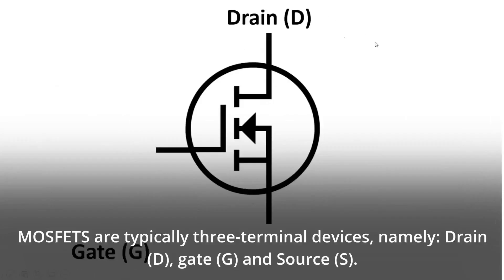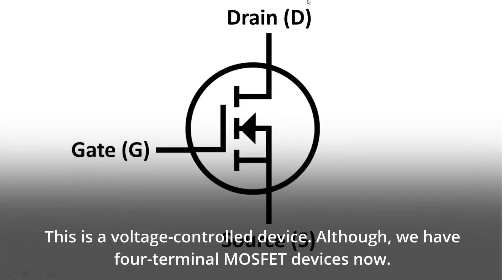We have typically three terminal devices, namely, drain D, gate G, and source S. This is a voltage-controlled device. Although, we have four terminal MOSFET devices now.